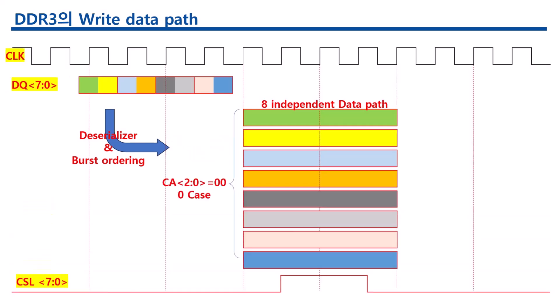DDR3 transfers data at twice the rate of DDR2-SDRAM, enabling higher bandwidth and peak data rates. Two new features are also added: automatic self-refresh and self-refresh temperature range, leading memory to control the refresh rates according to the temperature variation. Its prefetch buffer width is 8-bit.